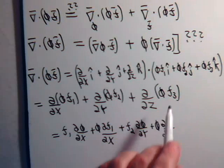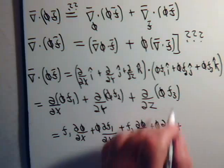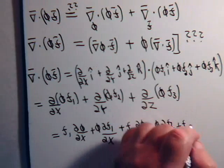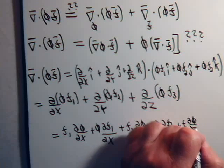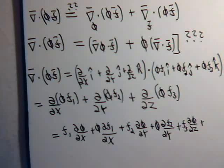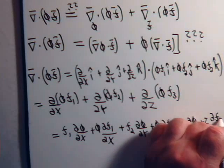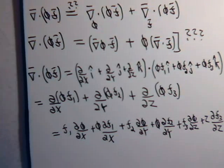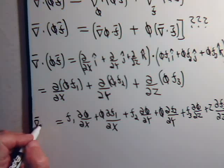And the last term from this last expression we get two more terms with f3, the partial of phi with respect to z plus phi times the partial of f3 with respect to z. And that is what that is equal to.